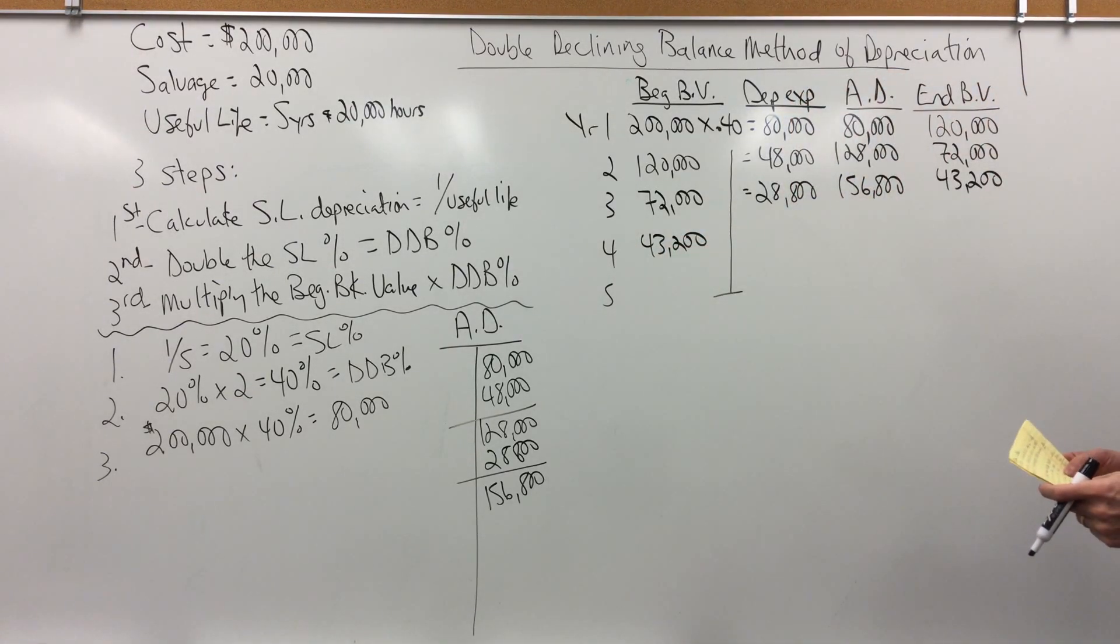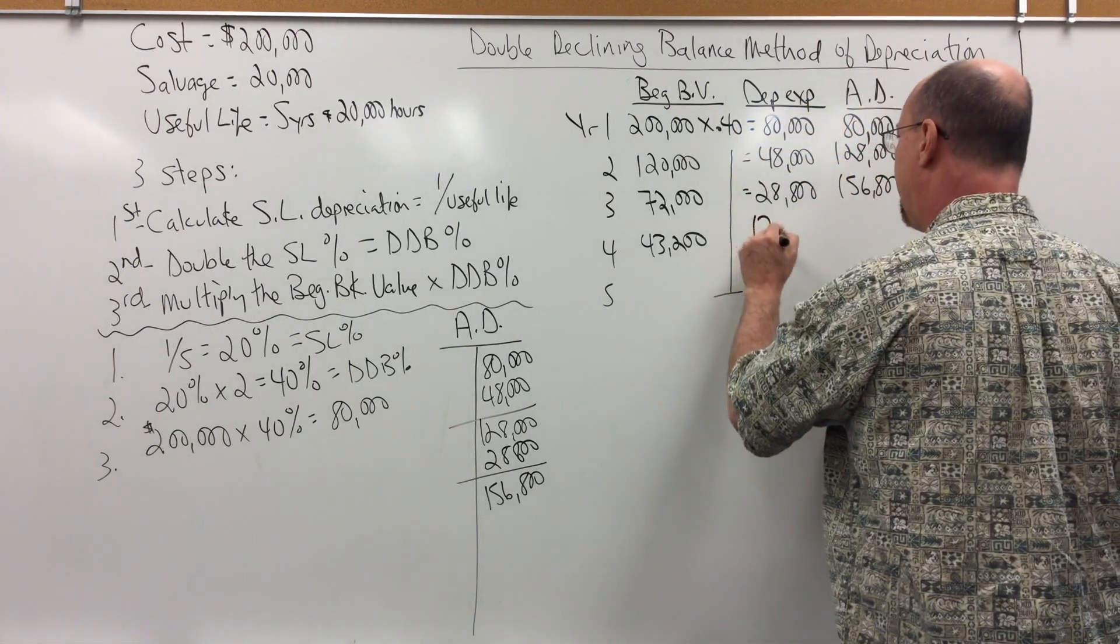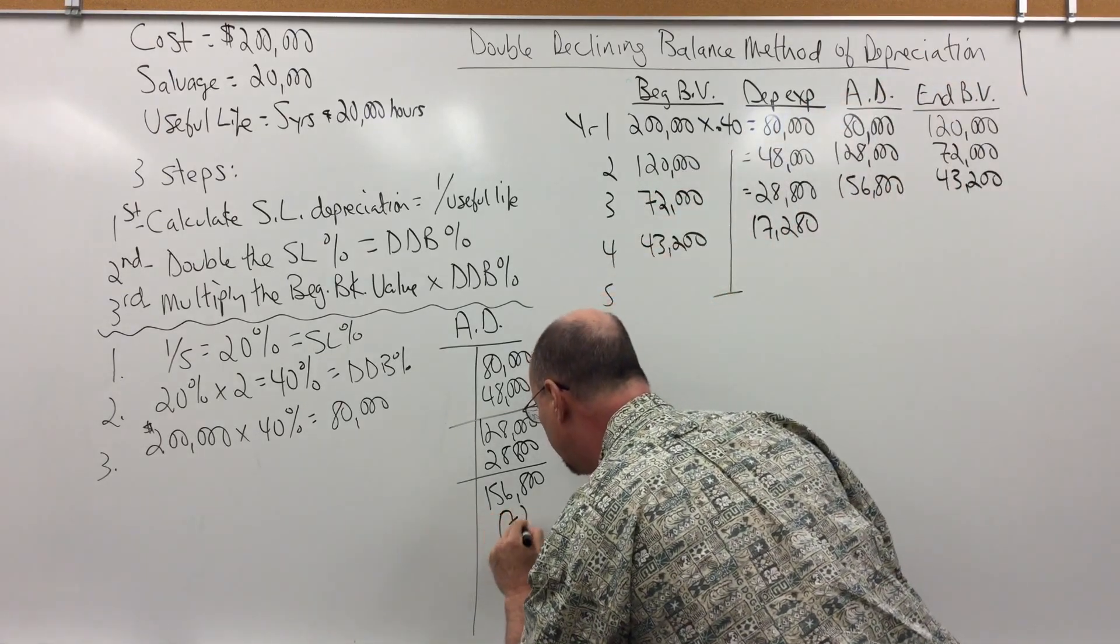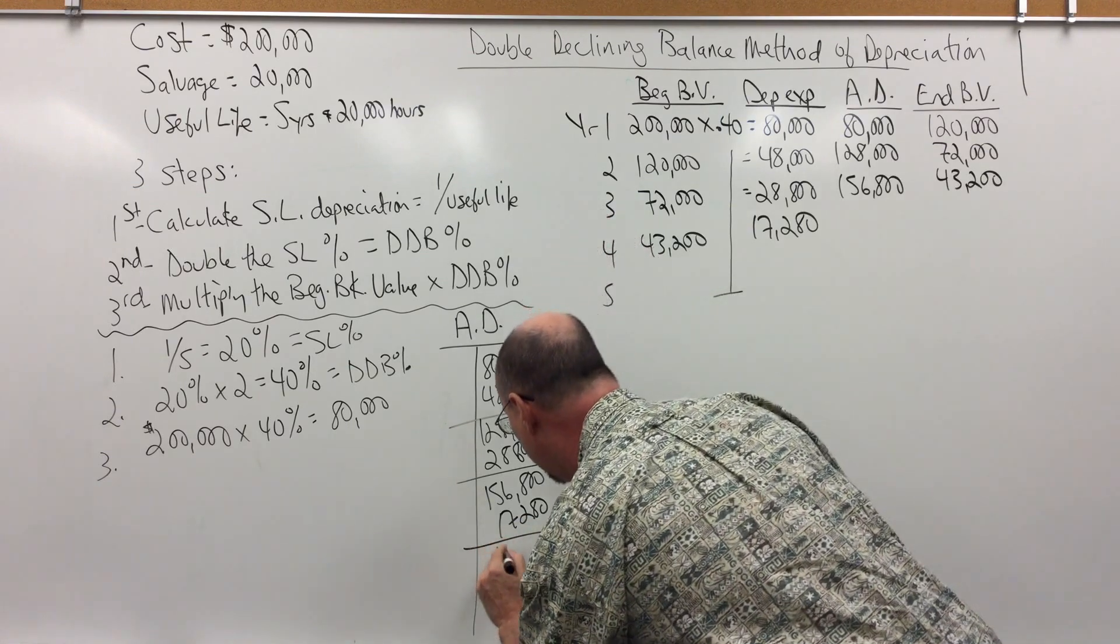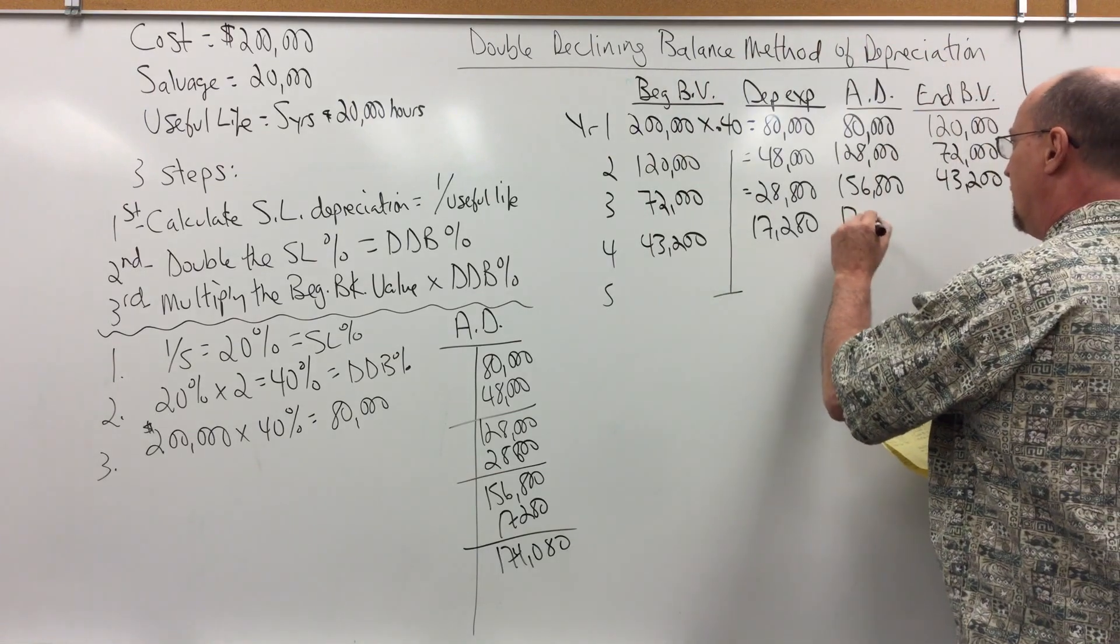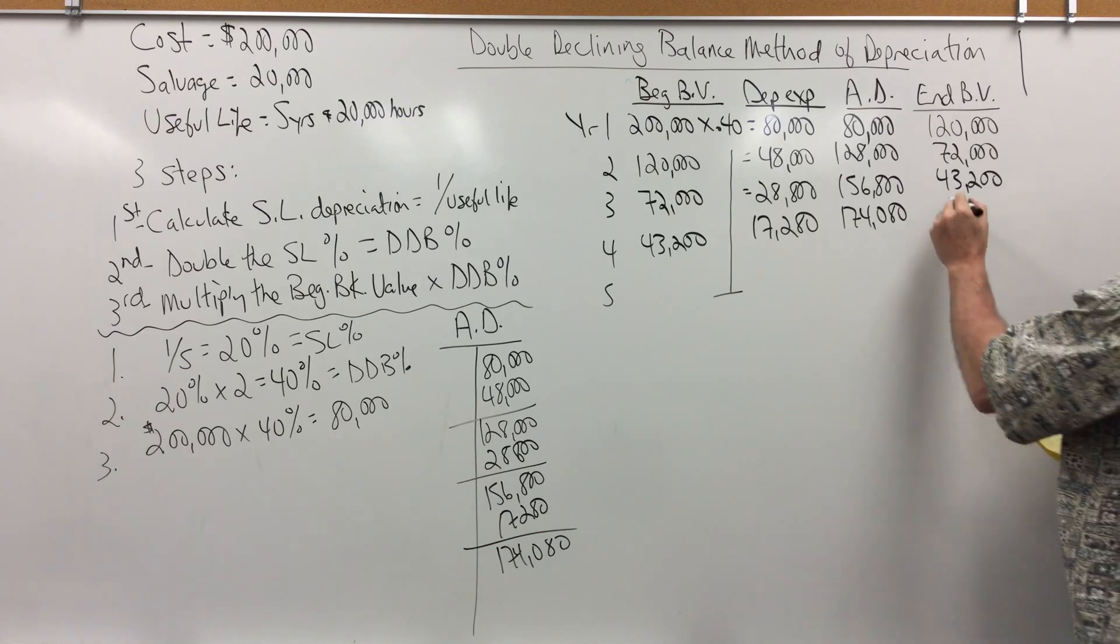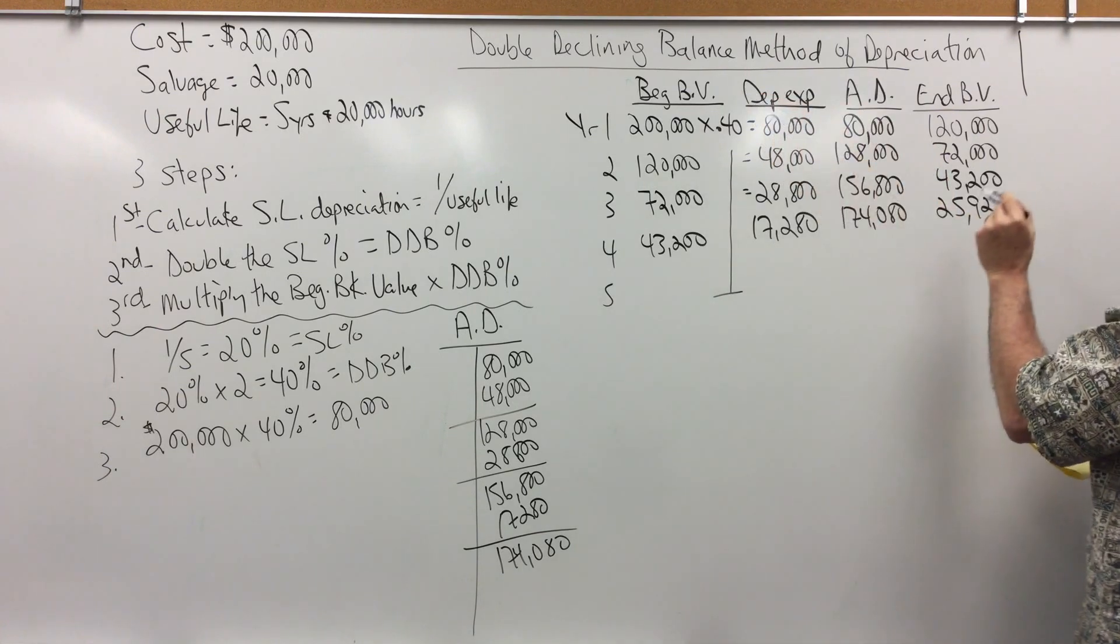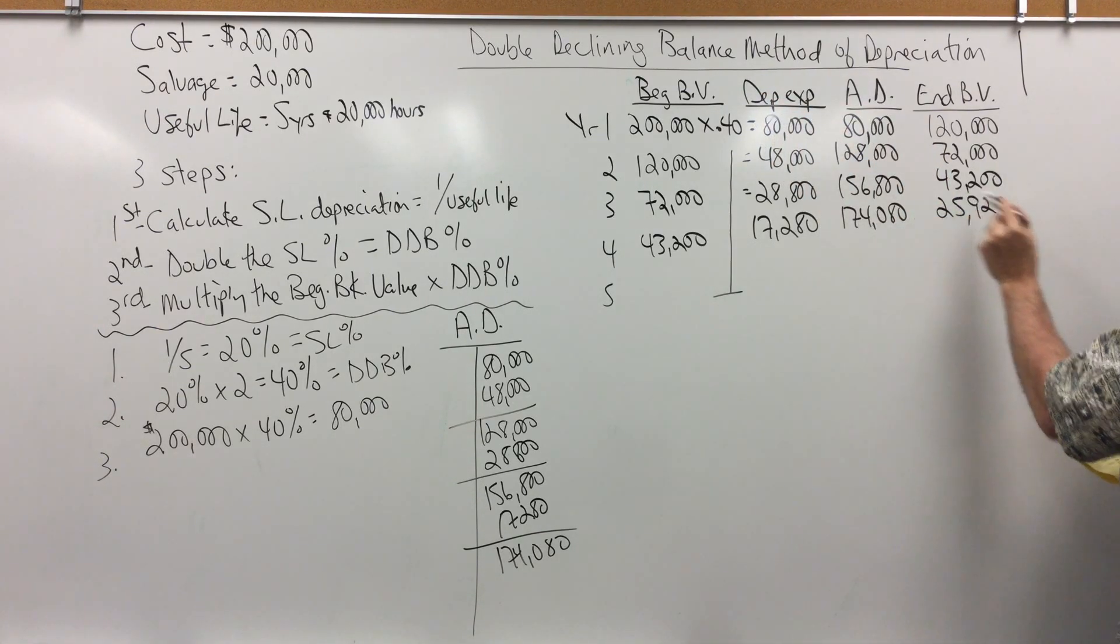I multiply 43,200 times 0.4, and I get 17,280. So I add that 17,280, and that gives me 174,080. And then my ending book value is 25,920. Cost of 200 minus accumulated 174,080 gives me 25,920.